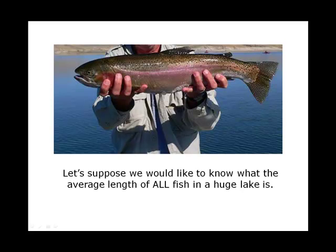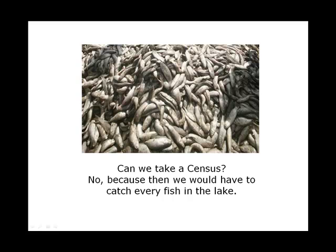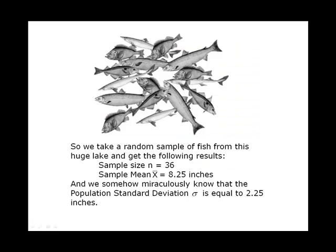Let's suppose we would like to know what the average length of all fish in a huge lake is. Can we take a census? No, because then we would have to catch every fish in the lake. So we take a random sample of fish from this huge lake and get the following results: a sample size of 36, a sample mean of 8.25 inches, and we somehow miraculously know that the population standard deviation is equal to 2.25 inches.